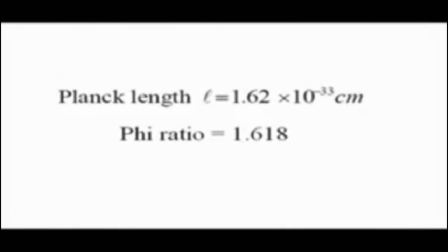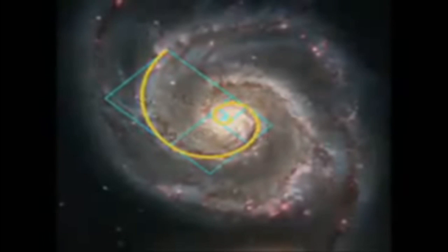This is important because the Planck length relates directly to the Fibonacci number and Phi-Golden ratio, which is a key mathematical element in all self-replicating systems. The question is, what is replicating itself and why?